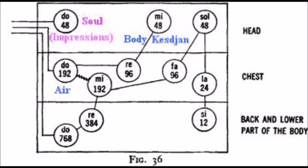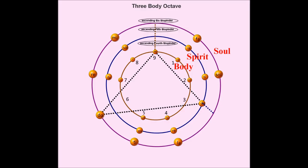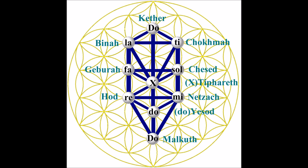Using Gurdjieff's Ouspensky diagram, which shows levels within the body — lower, middle, and head — the three octaves might look like this. In my moment of intuition I realized that Tiphareth is then the engine that helps to bridge these three positions: Mi to Fa, Sol to La, and Ti to Do. No wonder it is called beauty.